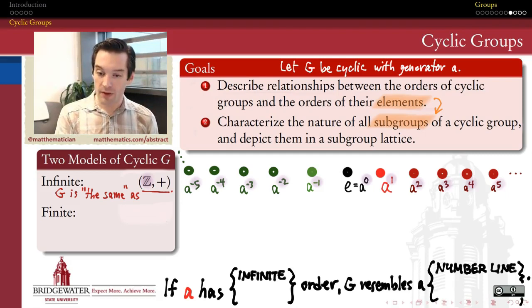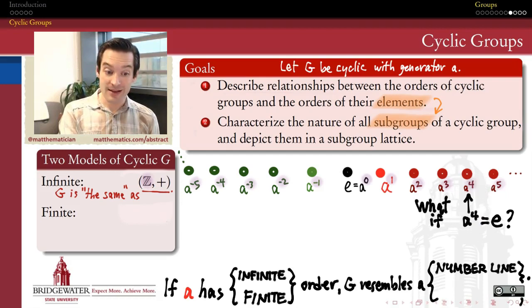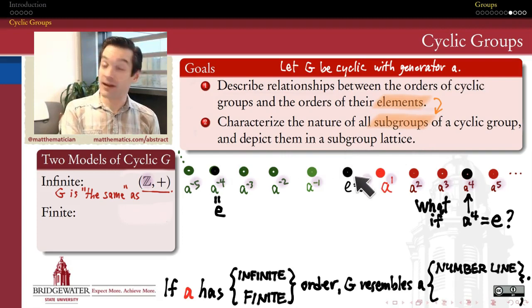On the other hand, the somehow more interesting cases are what happens when my generator has finite order. So if A has finite order, that means that there's some finite power of it such that that power of A becomes the identity. Just for the sake of argument, let's suppose that's the fourth power. So what would happen if in this example the order of A was equal to four? Then it would mean that this fourth power is again the identity element. And if the fourth power is the identity element, that also means that the negative fourth power, the fourth power of the inverse, is the identity element, and so forth and so forth.